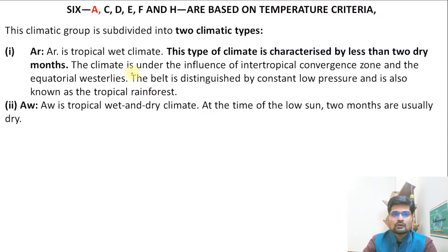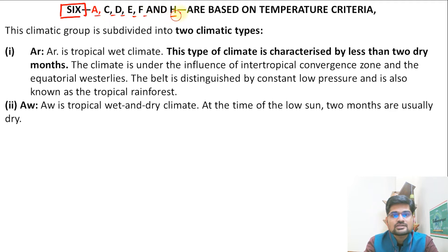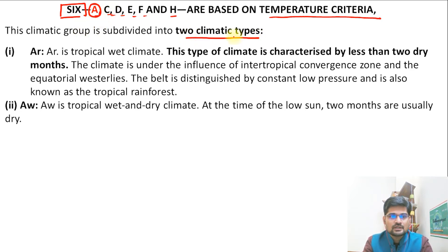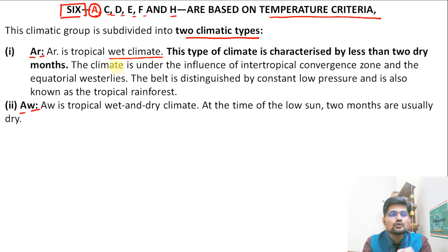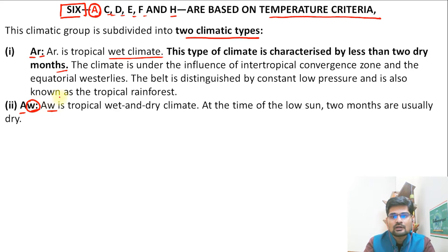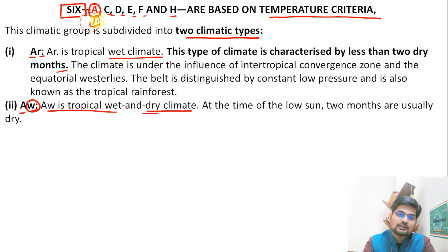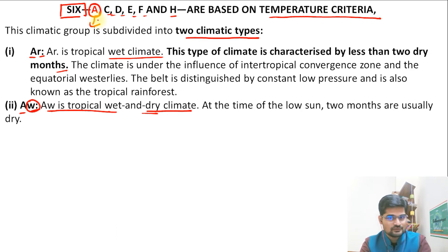Let's begin with the six temperature-based groups: A, C, D, E, F, and H. Group A is further divided into two subtypes: AR and AW. AR is tropical wet climate, having very few — only two — dry months, so it is largely wet. AW is tropical wet and dry climate, where W stands for wet and dry. So A represents tropical climate, coming from Köppen itself, with AR and AW as its two subtypes.